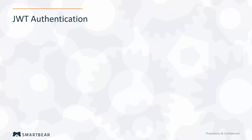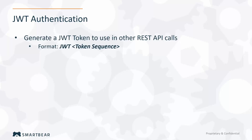This does require knowledge of REST APIs, so you do have to be a bit technical. To access our REST API, you need to be familiar with the JWT authentication required. You have to generate a JWT token to use in other REST API calls, and it follows the standard format for this token. It's required in the header for further API calls in Zephyr.